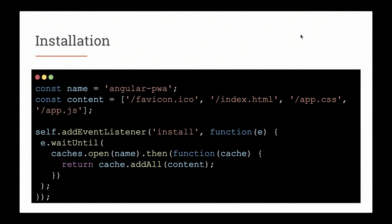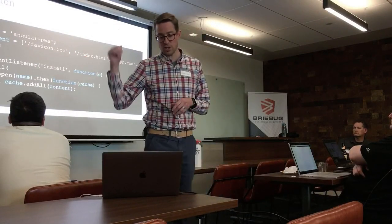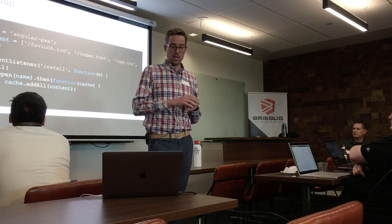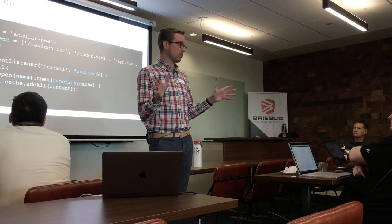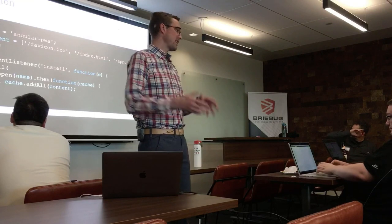In sw.js, we set up an app name and a list of content to cache. Inside that special scope, we add an event listener for the install event, where we open the cache and fetch all the listed content to add it to the cache. We use waitUntil to block — don't let the user quit the app until everything is installed. Otherwise, if you get only two files and not the rest, the app will be in a broken state.